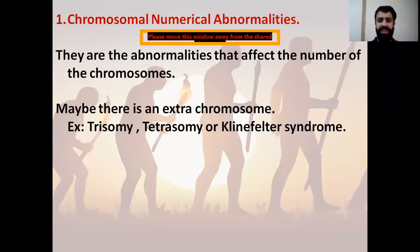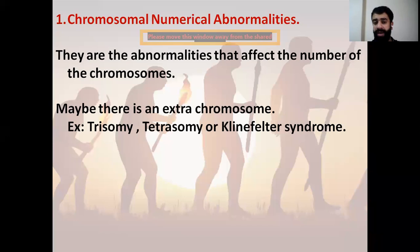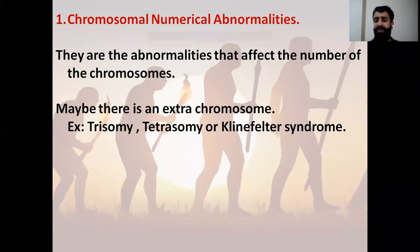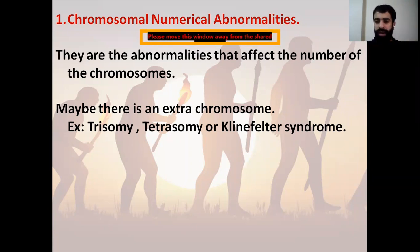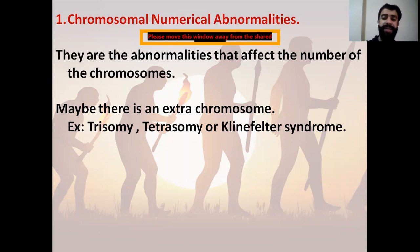Chromosomal numerical abnormalities are abnormalities that affect the number of the chromosomes. Maybe there is an extra chromosome or a missing chromosome. Extra chromosome is the case of trisomy — for example, trisomy 21 means we have three chromosomes number 21 instead of two. This is called trisomy. Tetrasomy means four chromosomes instead of two.